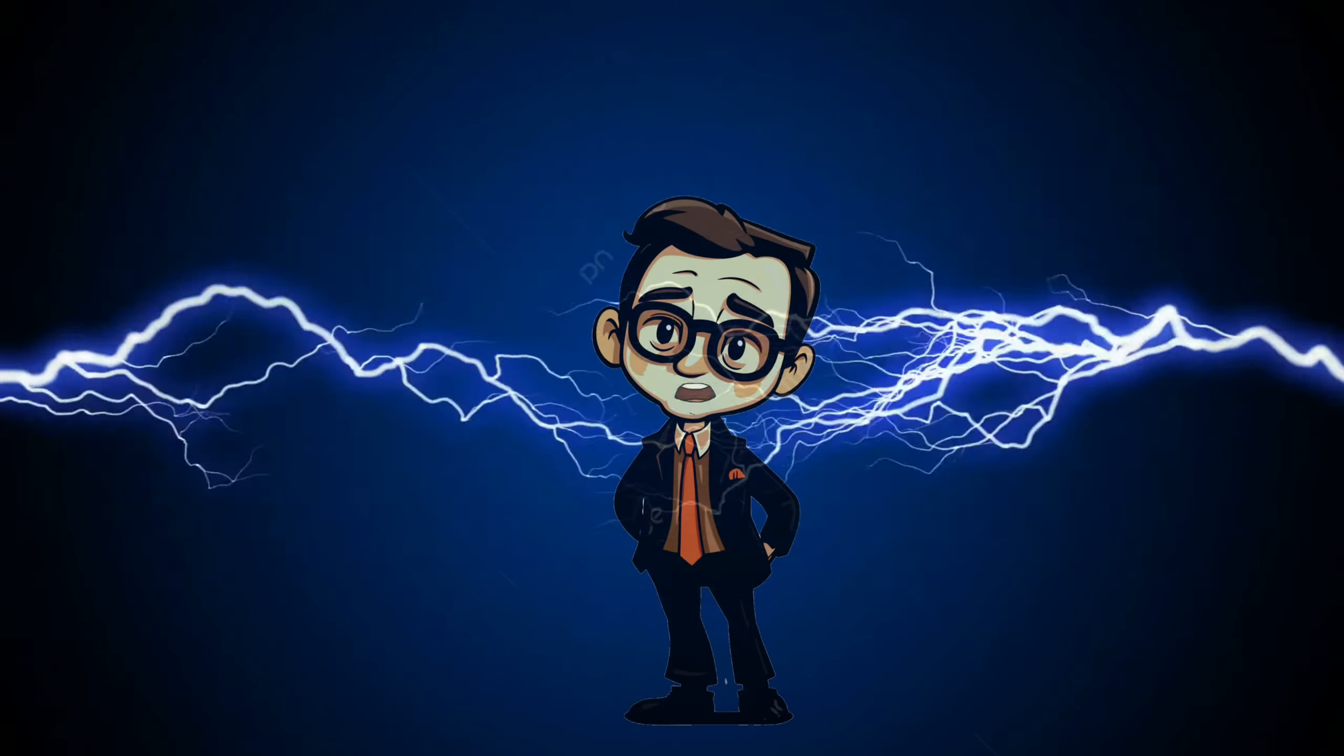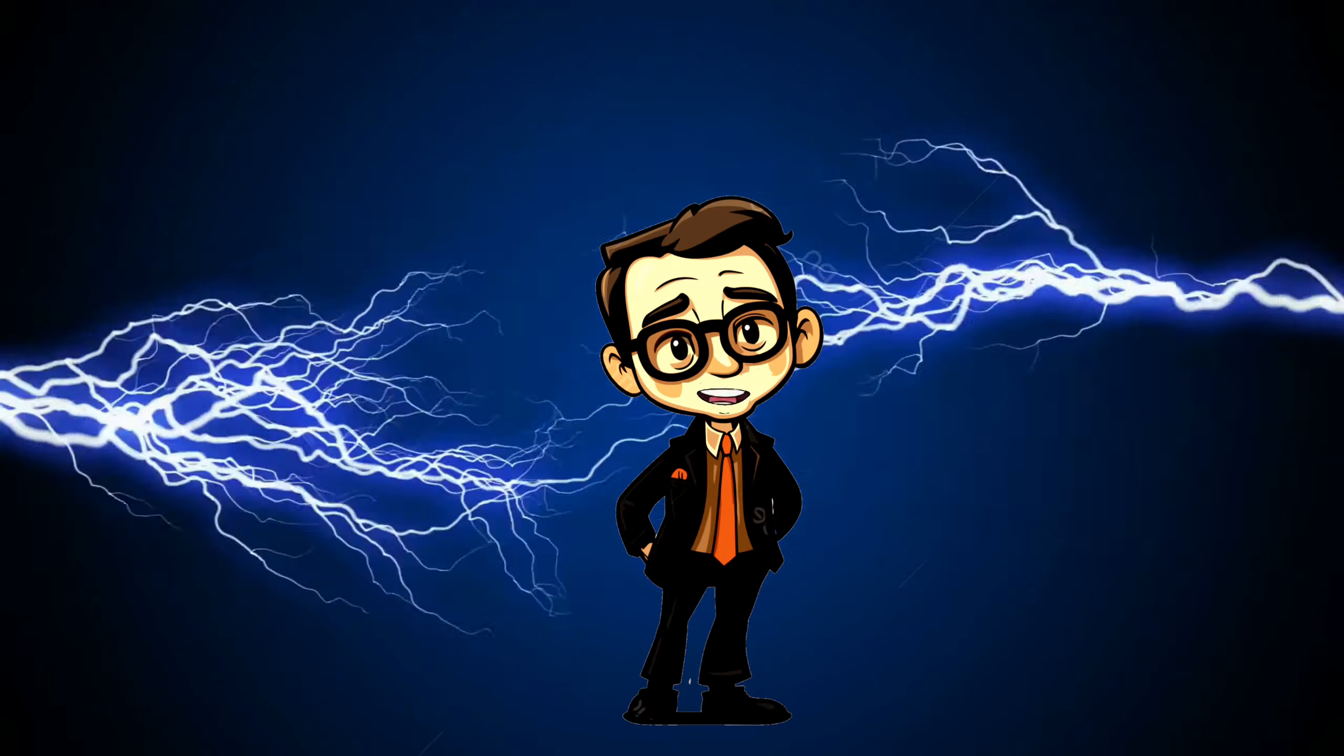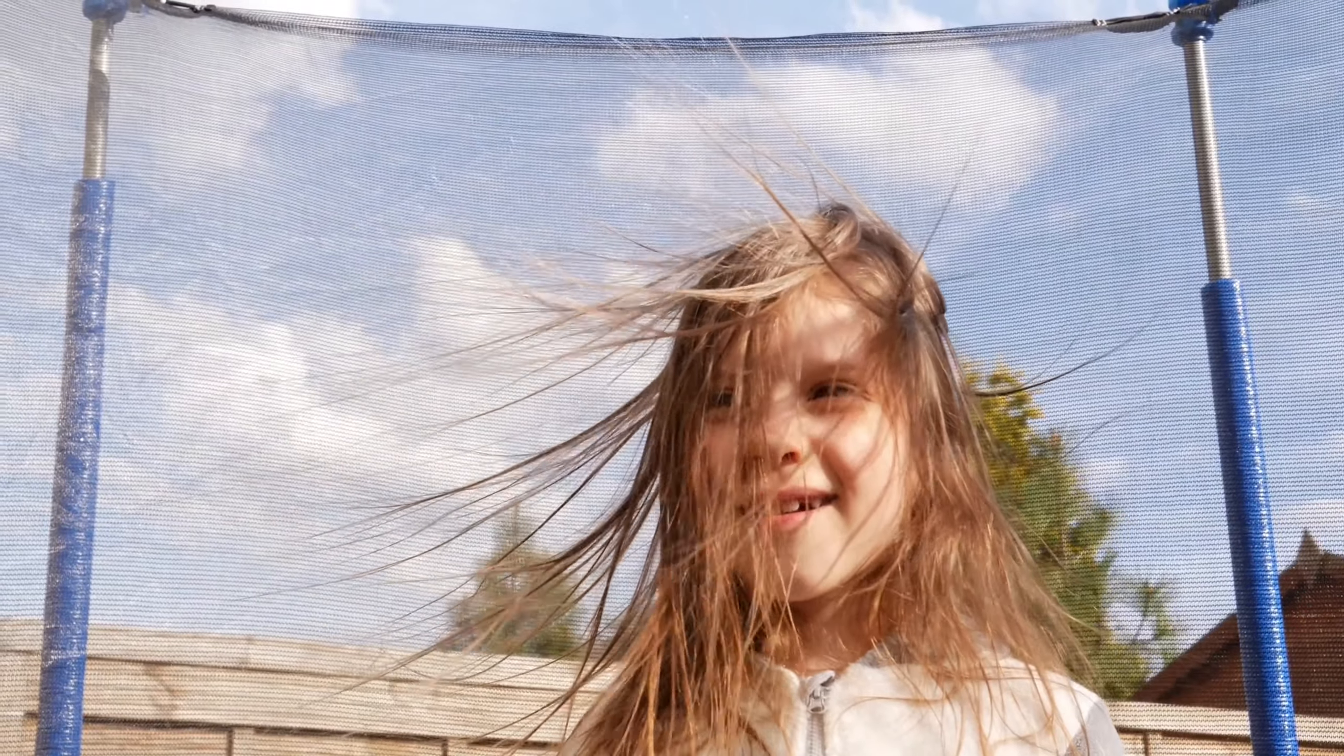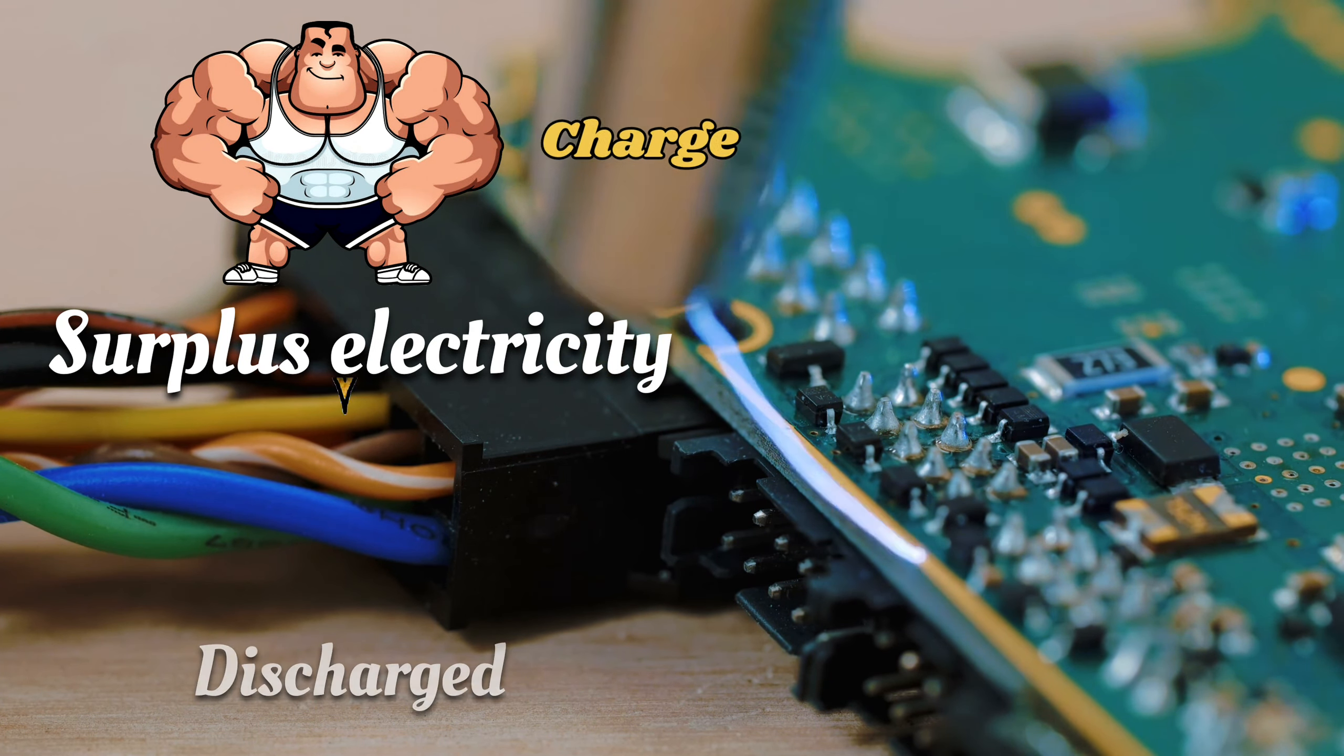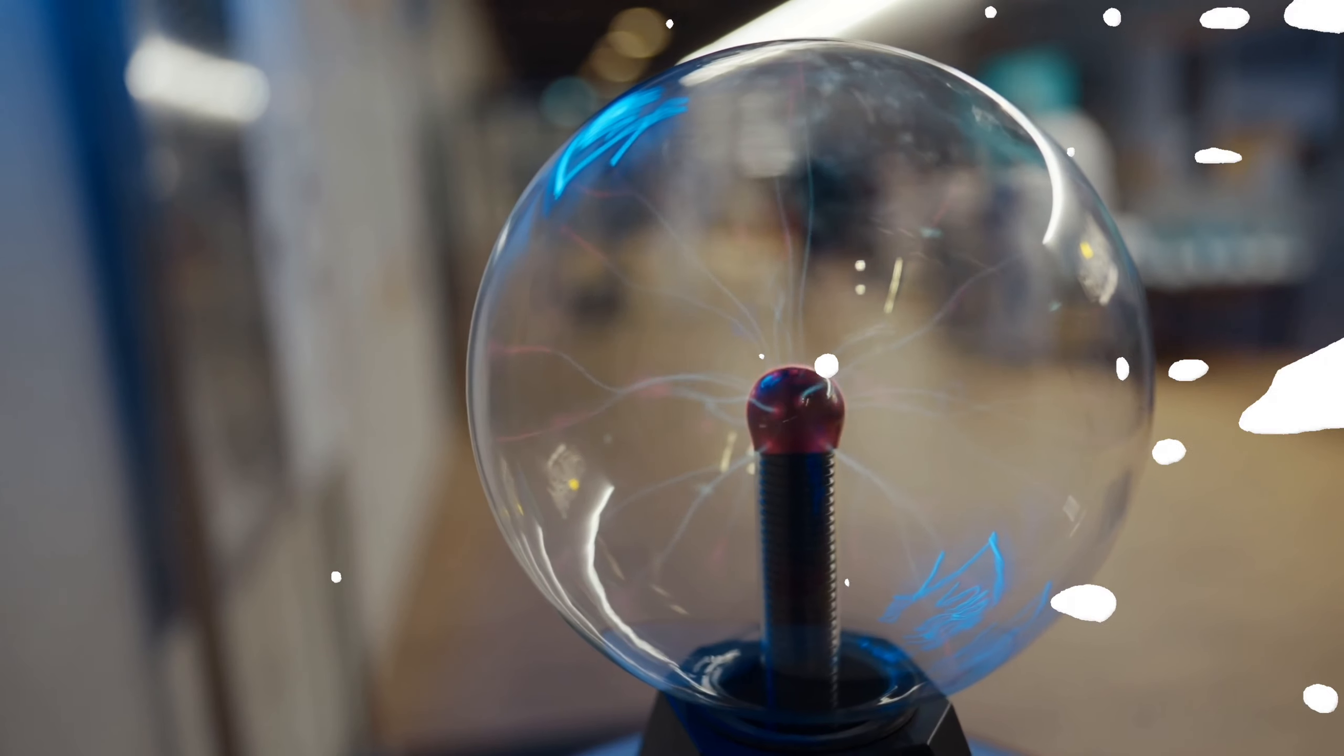If the electron-receiving material is either isolated or not an electrical conductor, it tends to hold onto the electrons, resulting in a buildup of electric charge. This stationary charge is referred to as static electricity. When conditions allow, the built-up charge flows and the surplus of static electricity is discharged, transforming into current electricity.